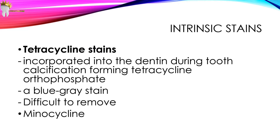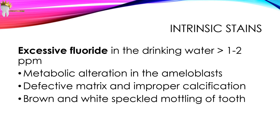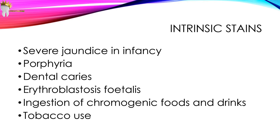Excessive fluoride in the drinking water — greater than 1 to 2 parts per million — can cause metabolic alteration in ameloblasts, resulting in a defective matrix and improper calcification of teeth. It presents as brown and white speckled mottling of the tooth. Other causes include severe jaundice in infancy, which can cause staining by bilirubin, and porphyria, a rare condition that can cause tooth discoloration making the tooth purplish brown. Dental caries also discolor the tooth.